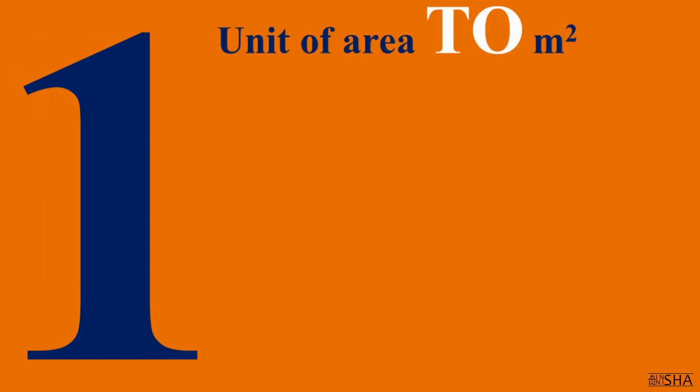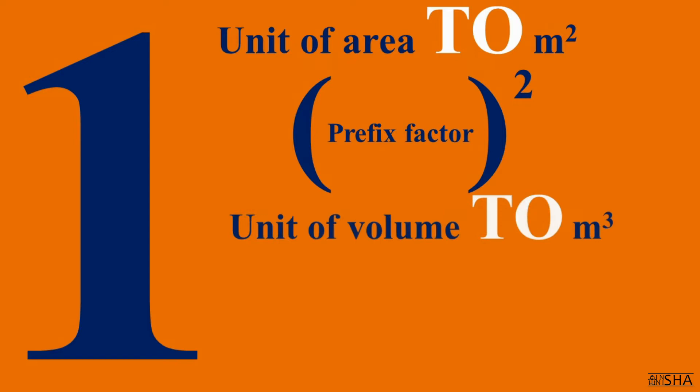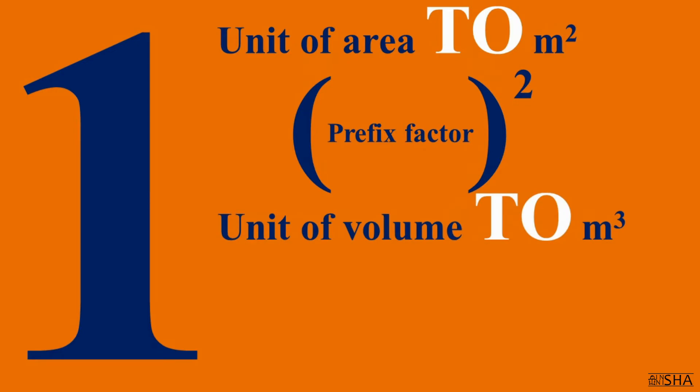Whoa, relationship is great, but it's time for us to convert. For those who have learned two rules from the previous episode well, there will be no problems for now. Rule number one: to convert any unit of area to square meters, you need to raise the appropriate prefix factor to the second power. And to convert any unit of volume to cubic meters, you need to raise the factor to the third power.